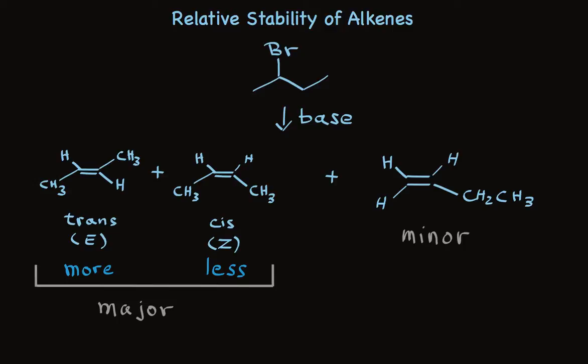My question is, why is 2-butene favored? Well, what's the difference? 2-butene has two alkyl groups attached to the double bond. 1-butene has one alkyl group attached to the double bond. And that's the difference.